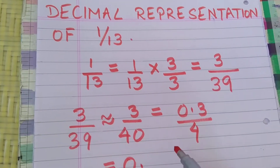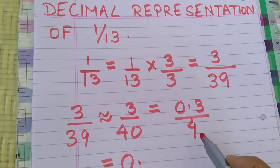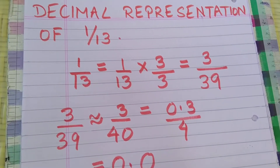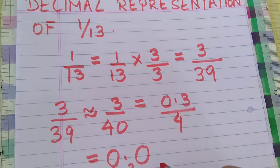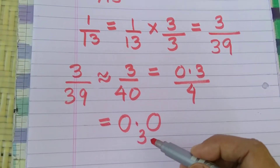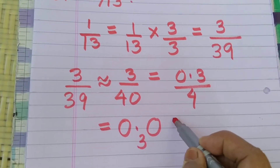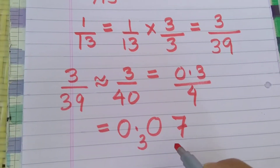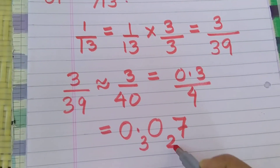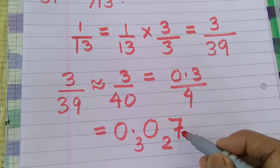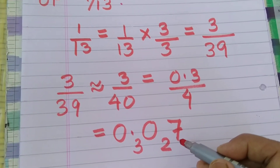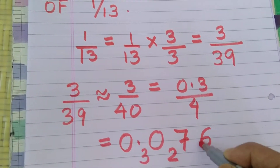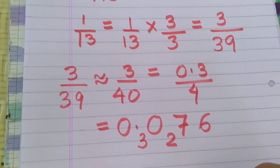So 3 is less than 4, so we put 0 and remainder 3. Then this becomes 30. So 7 times 28, remainder 2. This becomes 27. So now 4, 6 times 24, remainder 3.